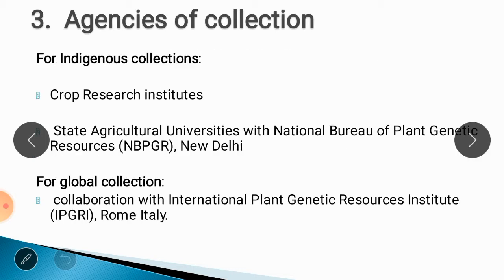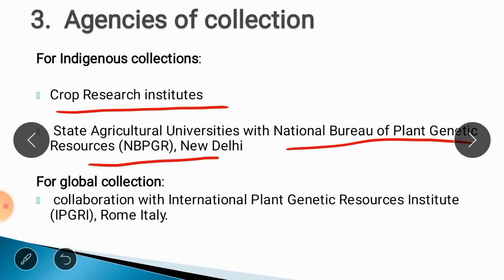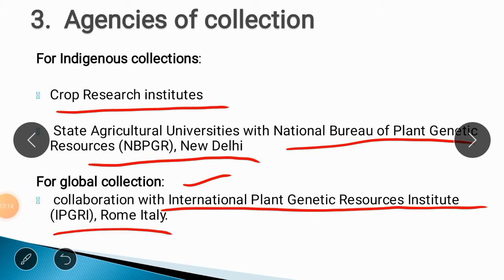The next aspect is agencies of collection. This task of germplasm collection is undertaken by crop research institutes. Normally, within countries, indigenous collections are collected through crop research institutes as well as state agriculture universities in collaboration with the National Bureau of Plant Genetic Resources, located at New Delhi, which is responsible for collection of indigenous material. For global collection throughout the world, collaboration with the International Plant Genetic Resource Institute, present at Rome, Italy, is required.